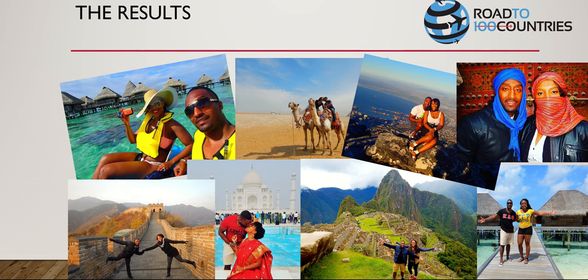Here were our results. Once we took matters into our own hands, we started going everywhere. On the left side you can see us in Tahiti for our honeymoon, completely free - we flew Delta and stayed at the Hilton Moorea in an Overwater Bungalow for free. We've also been to Egypt, South Africa's Table Mountain, Morocco, the Maldives, Peru's Machu Picchu, the Taj Mahal in India, and the Great Wall of China. We've been to all seven wonders of the world.